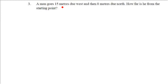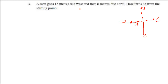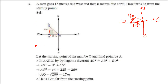A man goes 15 meters due west, then 8 meters due north. We mark the directions: north, south, east, west. The man goes 15 meters due west and then 8 meters due north. We have to find how far he is from the starting point. Since the angle between west and north is 90 degrees, we use Pythagoras theorem: 15 square plus 8 square is 225 plus 64, which is 289. The square root of 289 is 17 meters. So the man is 17 meters away from the starting point.